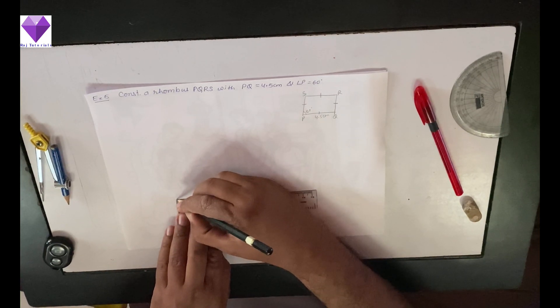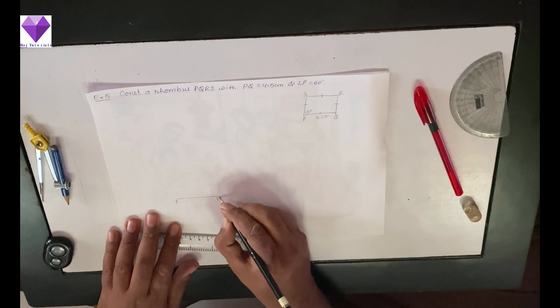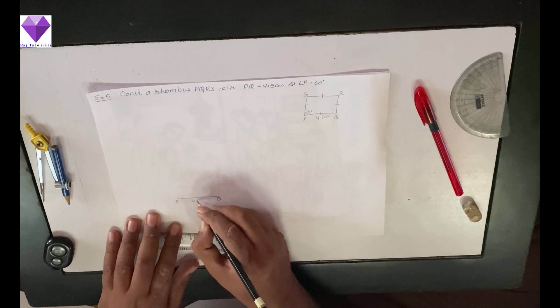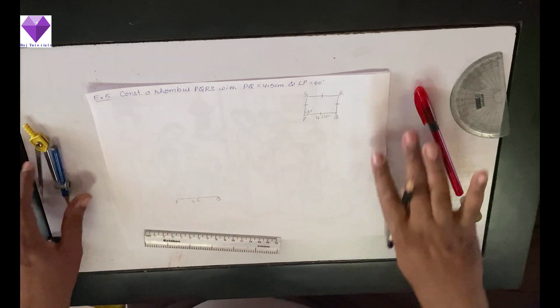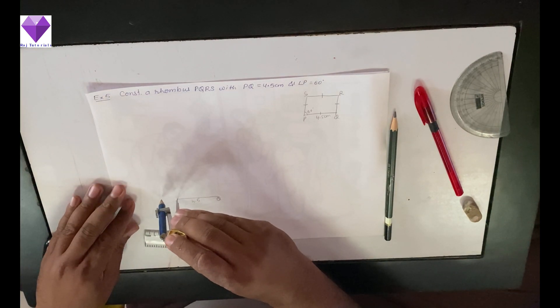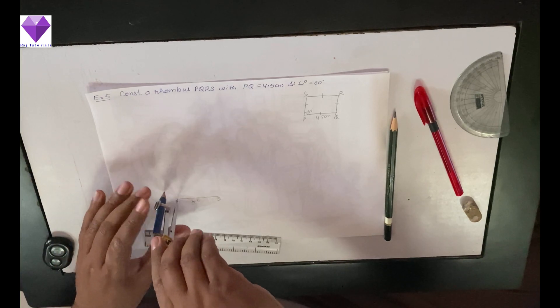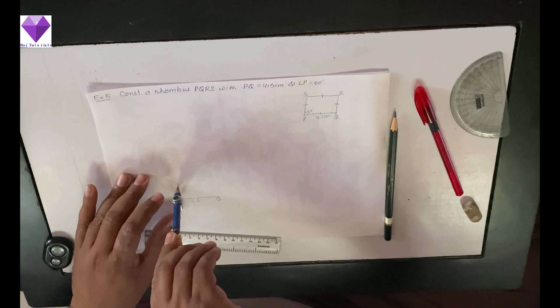So, 4.5 centimeter base and I will name it as PQ. Now at P, I have to draw 60 degrees, so using a compass I will mark a light semicircle of any radius.